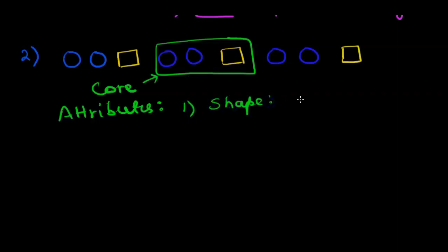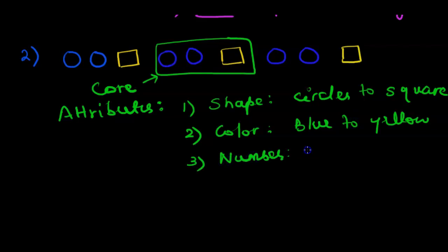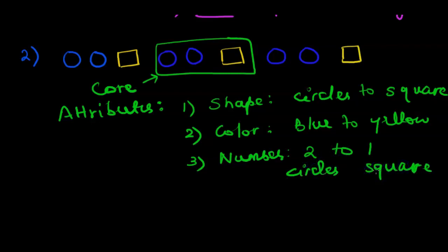From the core we can see: first, shape is changing from circles to square. The next attribute that is changing is color — color is changing from blue to yellow. Next we look at number: there are two blue circles and one yellow square, so number is changing from two to one. This is how we explain the attributes of a given pattern.